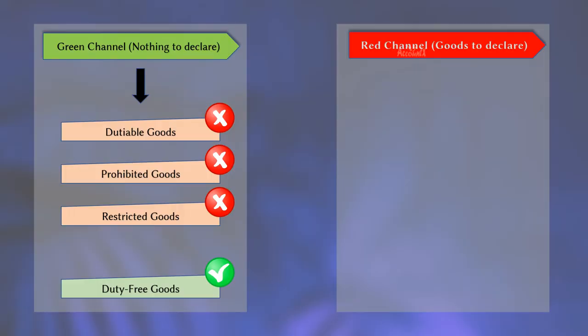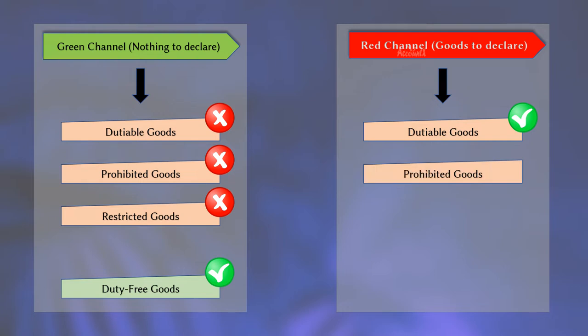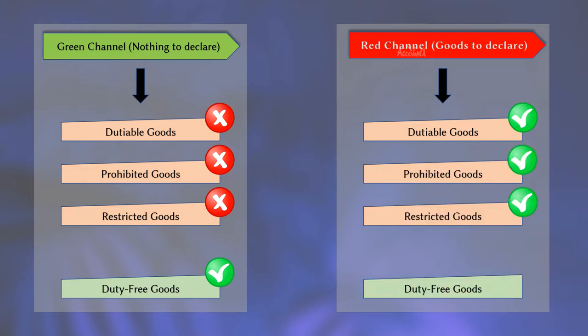Now the red channel: you must use the red channel when you have goods to declare. That is, first when you have dutiable goods, then if you have prohibited goods or restricted goods, whether or not you carry duty free goods. To put it differently, even if you carry duty free goods, if you have any of these first three categories — dutiable, prohibited, or restricted goods — you must use the red channel.